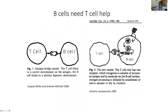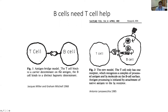The requirement for T cell help has been known since the 1960s, where Jacques Miller and Grant Mitchell did classical experiments thymectomizing rabbits and giving them a vaccine. They determined that if you take away the thymus of an organism you lose antibody responses. They developed what's called the antigen bridge model, in which a B cell and T cell bind to the same antigen — this was the classical thought of why you need T cells to get antibody.